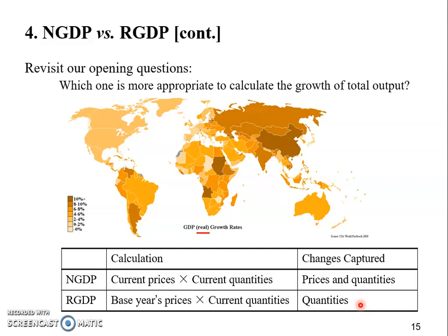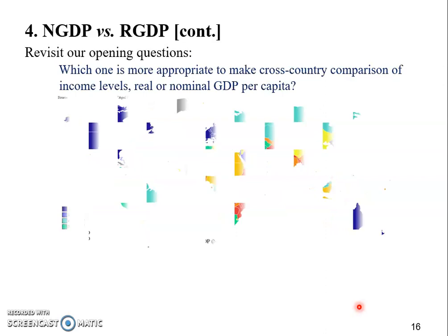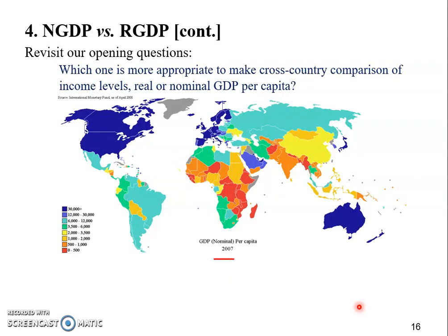When we find a change in real GDP — for example, real GDP increasing from $250 to $500 between 2017 and 2018 — that change can only come from quantities, because the prices are held the same. So when we see an increase in real GDP, we know this economy is producing more this year compared to the previous year. We also raised another question about comparing income levels across countries.